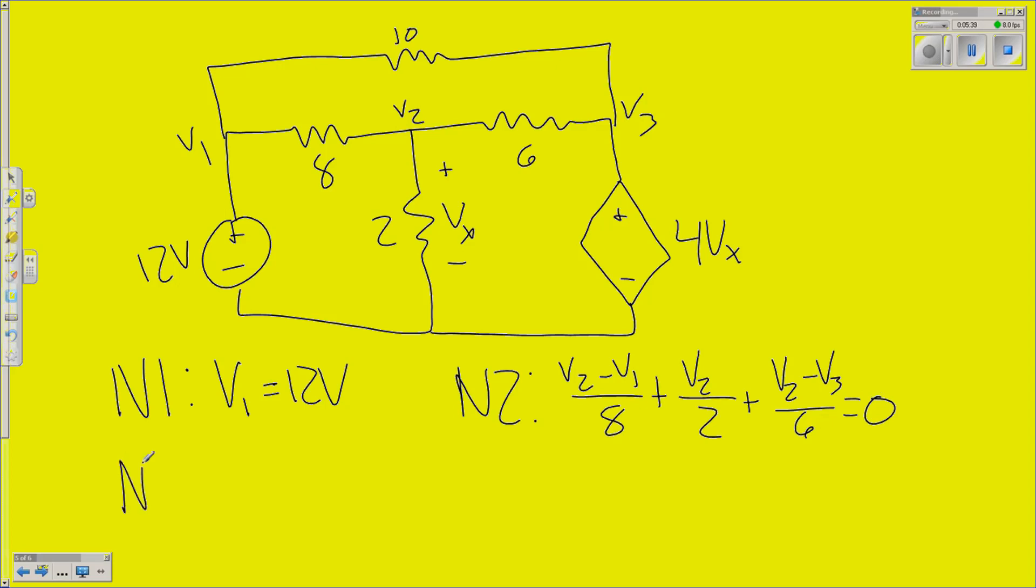Now, node 3, in this case, is even easier, right? So, if we already know Vx is equal to V2, then this is equal to 4V2. And we've already got it in terms of one of our other variables. So, V3 is just 4 times V2. Super easy.